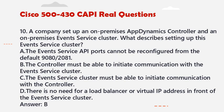Question 10: A company set up an on-premises AppDynamics controller and an on-premises events service cluster. What describes setting up this events service cluster? A. The events service API ports cannot be reconfigured from the default 9080/9081 ports. B. The controller must be able to initiate communication with the events service cluster. C. The events service cluster must be able to initiate communication with the controller. D. There is no need for a load balancer or virtual IP address in front of the events service cluster. Answer: B.